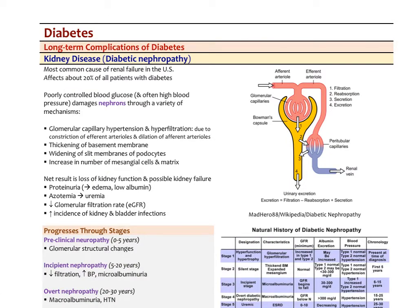One of the most significant organ systems affected beyond the cardiovascular system in long-term, uncontrolled diabetes is the kidney, resulting in diabetic nephropathy. It's actually the most common cause of renal failure in the US, and it's preventable if the diabetes is brought under control. It affects about 20% of all patients with diabetes. We always look at kidney function as part of the continued exam of diabetic patients, and this results from poorly controlled blood glucose and often hypertension, which in metabolic syndrome tend to go together.